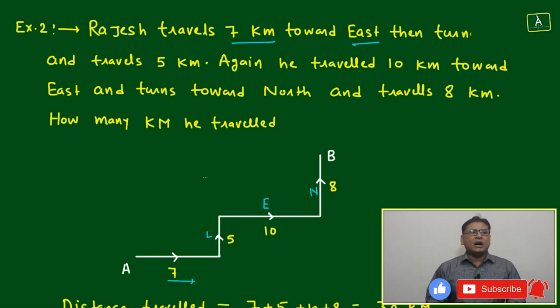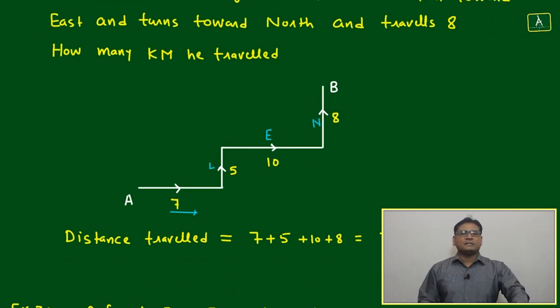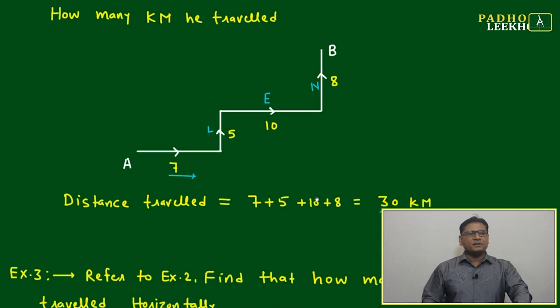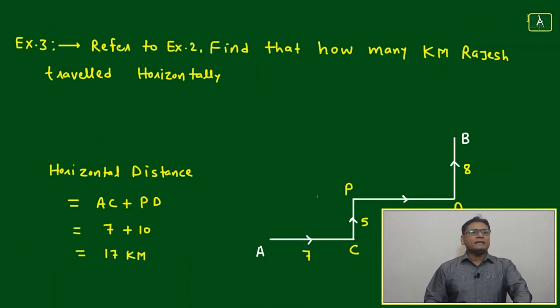Now question is how many km he travelled? Distance travelled will be 7 plus 5 plus 10 plus 8, 30 km. Simple. Now the same question extension is there, example 3: refer to example 2, find how many km Rajesh travelled horizontally.